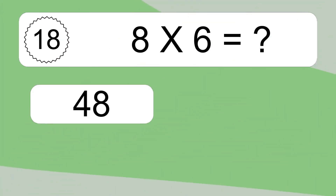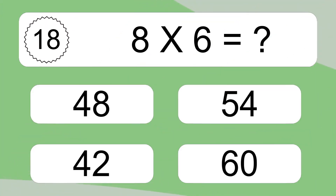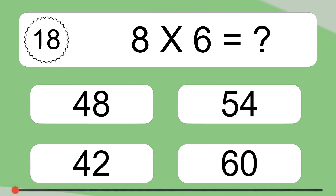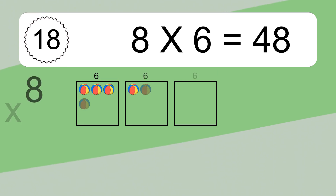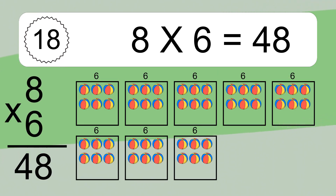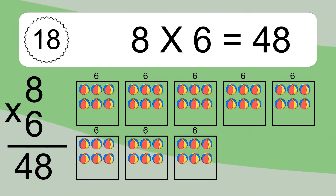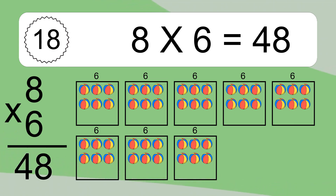8 times 6 equals what? 8 times 6 equals 48. We have 8 boxes, and each box has 6 colorful balls inside. If you count all the balls in all the boxes together, you will have 8 times 6 balls. This equals 48 balls.